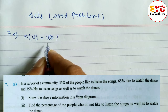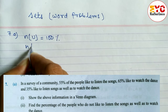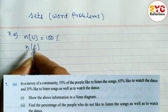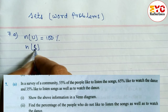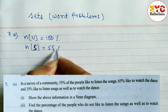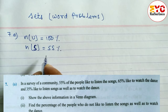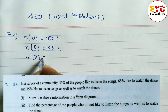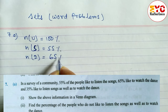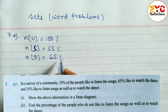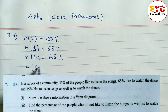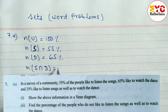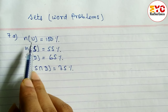55 percent of people like to listen to a song, so n(S) — the number of people who like listening to song — is equal to 55 percent. 65 percent like to watch dance, so n(D) is equal to 65 percent. Similarly, 35 percent like to listen to song as well as watch dance — that means the intersection — so n(S ∩ D) is equal to 35 percent.